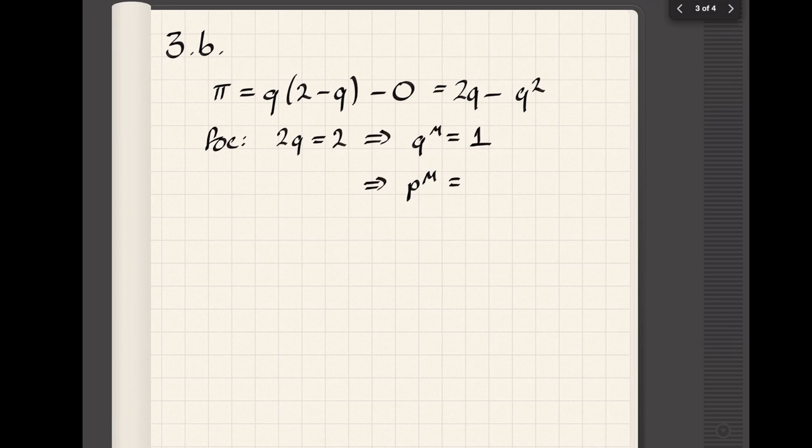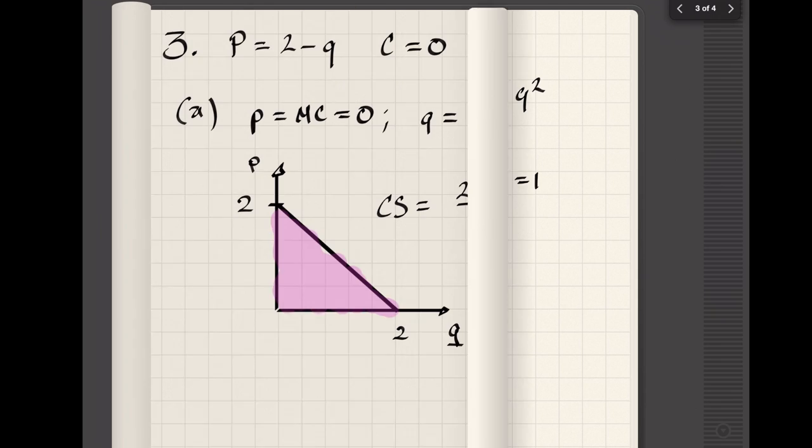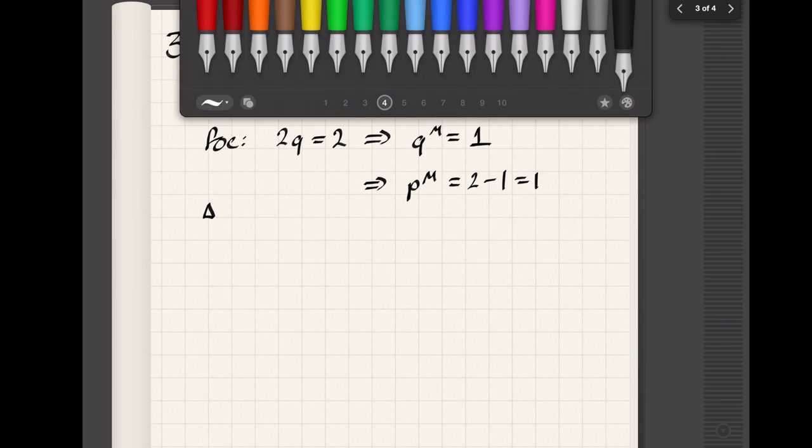Now moving over to a monopoly, we have to write down the profits. Taking first order conditions, we get that the quantity is going to be equal to one. Using inverse demand, that means that the price has to be equal to one, so we can draw a graph.